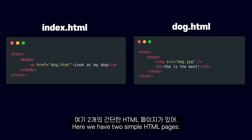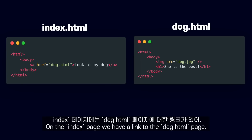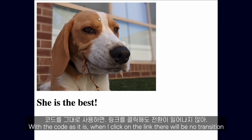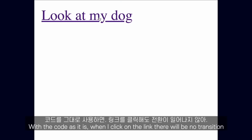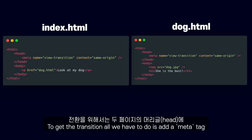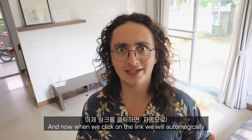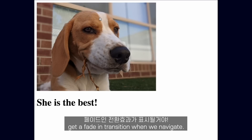Here we have two simple HTML pages. On the index page, we have a link to the dog HTML page. And on the dog HTML page, there is an image and a title. With the code as it is, when I click on the link, there will be no transition. To get the transition, all we have to do is add a meta tag with the name View Transition to the head of both of our pages. And now, when we click on the link, we will automatically get a fade-in transition when we navigate.